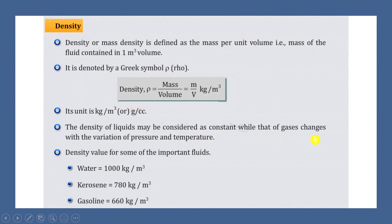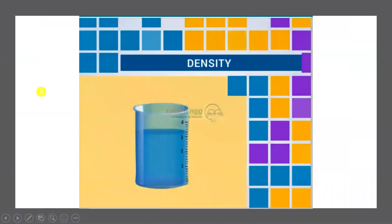The density of liquids may be considered as constant, whereas the density of gases changes with variation in pressure and temperature. Here are the density values of some important fluids: water has a density of 1000 kg/m³, kerosene oil has a density of 780 kg/m³, and gasoline has a density of 660 kg/m³. Next, with the help of a video, let us see how to measure the density of a fluid.